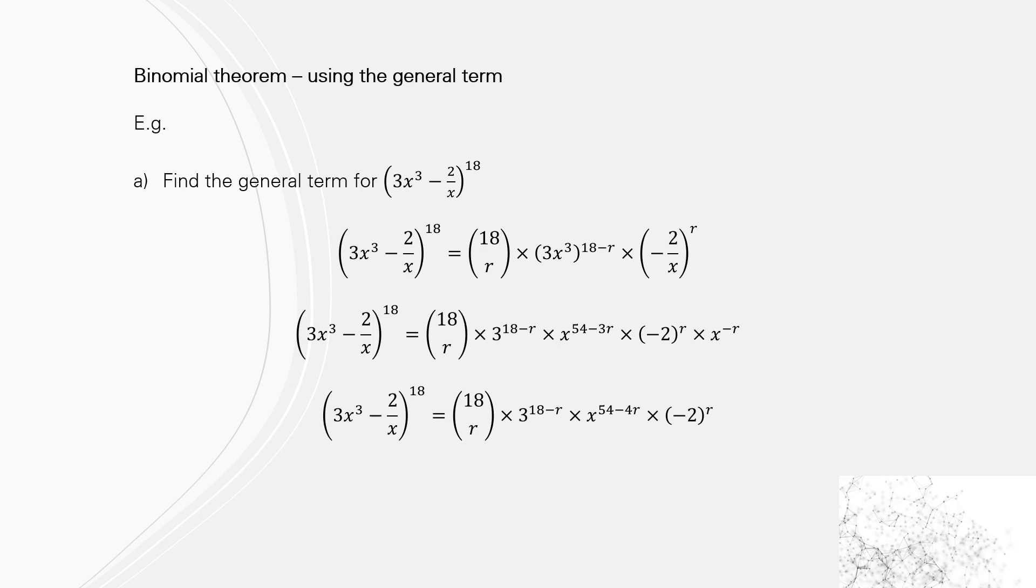So when we have our general term here, we have 18Cr times (3x³)^(18-r) times (-2/x)^r.